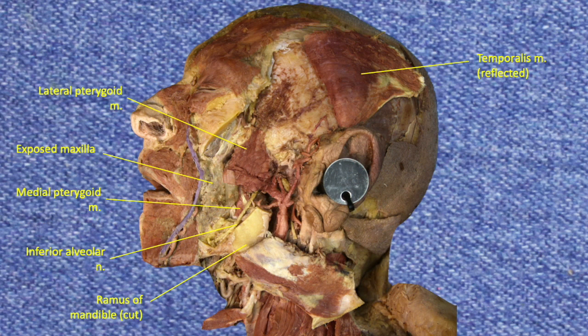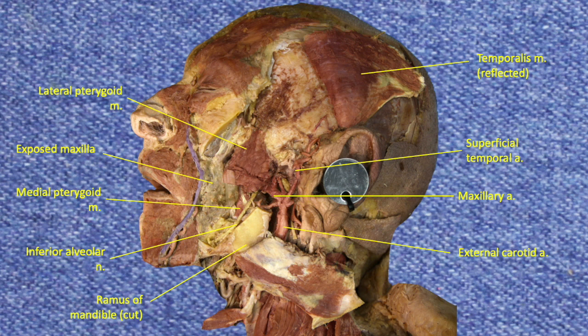Moving back to the dissection, the structures we just discussed are labeled. Another major structure found in this area is the external carotid artery, which terminates into two relatively large vessels just posterior to the mandible: the superficial temporal artery observed previously, and the maxillary artery. The latter can run deep to the pterygoid muscles, as in this case, or lateral to the muscles.